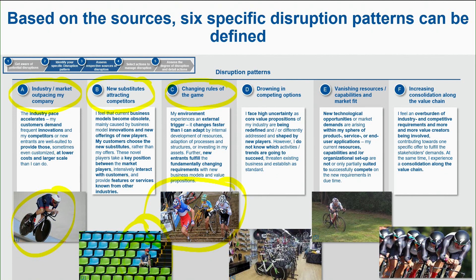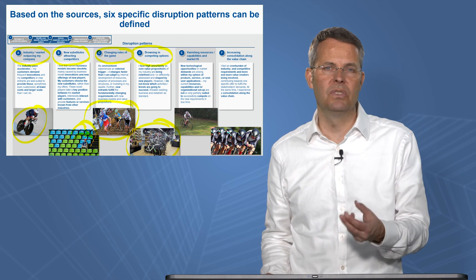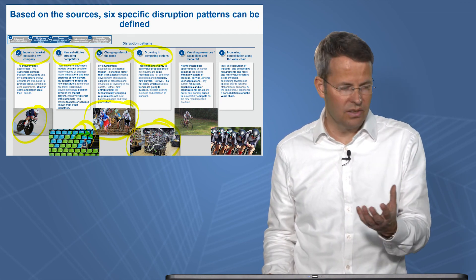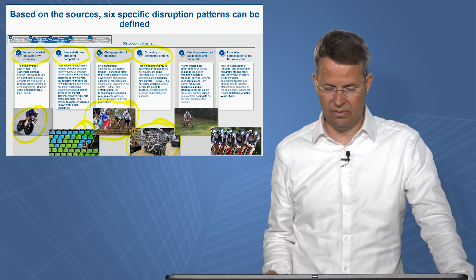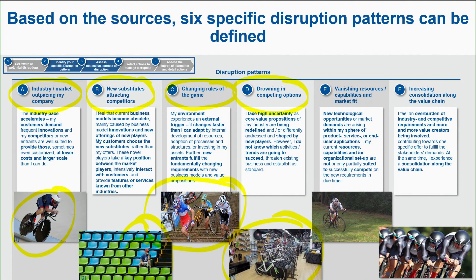The fourth pattern is drowning in competing options. The automotive industry is probably very typical for this — there are many potential influences and disruptions, and companies have to very specifically assess which to follow and where to put their dollars.